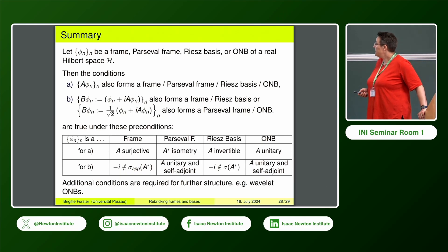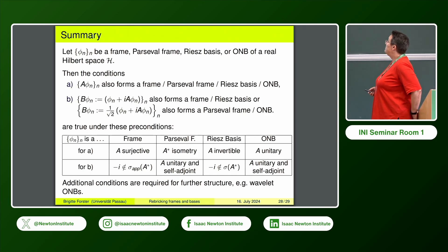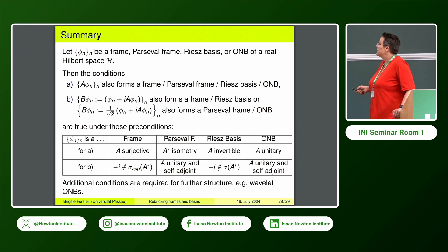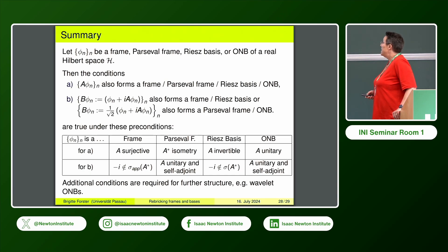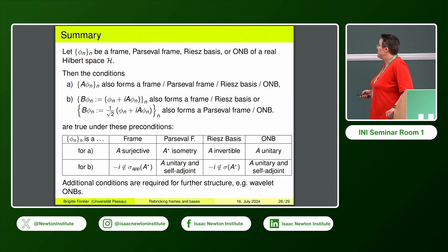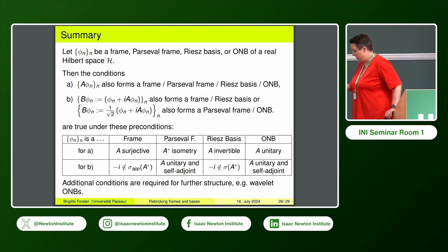To summarize: we can produce a table based on what we start with—frame, Parseval frame, Riesz spaces, or orthonormal basis from a real Hilbert space. We can rebrick them by producing a frame via operator A, a Parseval frame, Riesz spaces, or orthonormal basis by putting two together as φ_n + i A φ_n. The conditions are: for frames, surjectivity and −i not in the approximate point spectrum; for Riesz spaces, −i not in the spectrum of A*; for Parseval frames and orthonormal bases, A must be unitary and self-adjoint. With additional structure like translation or dilation invariance, further conditions apply.